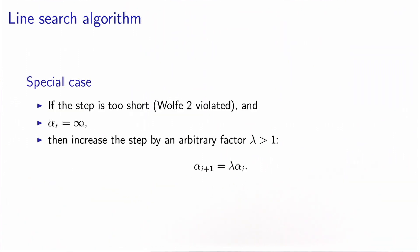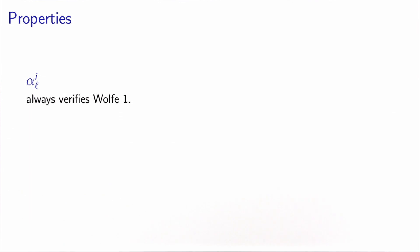There is one special case: if the first Wolfe condition is verified but the second Wolfe condition is violated, meaning the step is too short, and αR has not been updated yet — it's still at plus infinity — then we cannot calculate the midpoint of the interval. In this case, we simply increase the step by an arbitrary factor greater than one, typically two, which doubles the size of the step. This special case happens only when αR equals plus infinity.